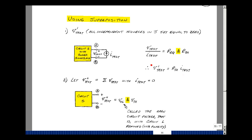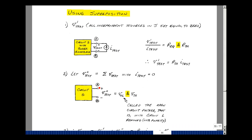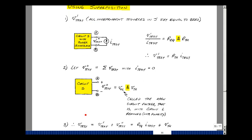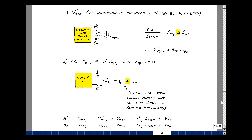Now set this source equal to zero — make it an open circuit — and find the voltage across here. We'll call that V-test double prime, and this is due to all the independent sources inside the box. We could use superposition or any of our theorems to find this. This voltage is also called the Thevenin voltage, or sometimes the open circuit voltage, because we've removed the load circuit.